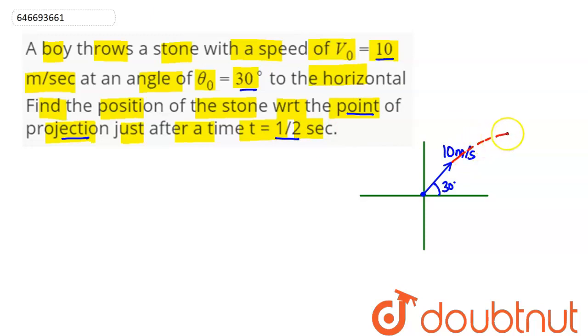So we can say this particle reaches at this position. Now we can calculate its x direction displacement and y direction displacement. This particle's coordinates with respect to origin are x comma y. So we apply s equals ut plus half at squared equation on this particle along x direction.